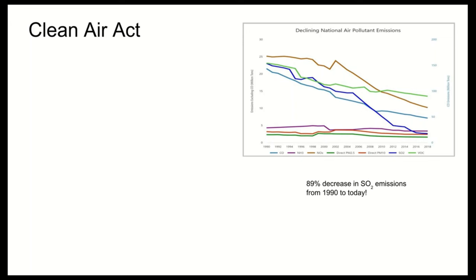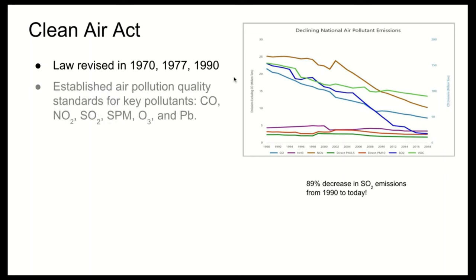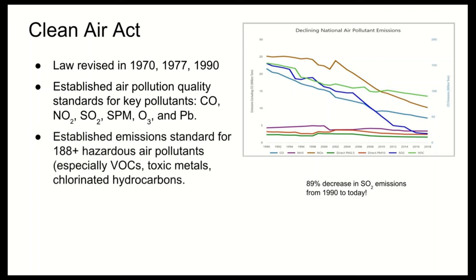The Clean Air Act, revised in 1970, 1977, and 1990, established air pollution quality standards for key pollutants: carbon monoxide, nitrogen dioxide, sulfur dioxide, suspended particulate matter (SPM), ozone, and lead (Pb). Air pollutants have been on a steady decline since 1970, with an 89% decrease in sulfur dioxide emissions from 1990 to today. The Act also established emission standards for nearly 200 other hazardous air pollutants, especially VOCs, toxic metals, and chlorinated hydrocarbons. The 1990 amendment required reduced SO2 emissions from power plants, significantly reducing acid rain in the US.